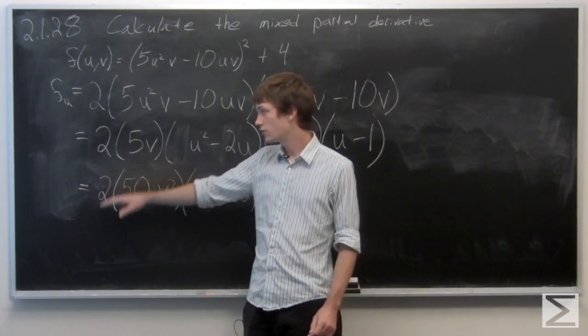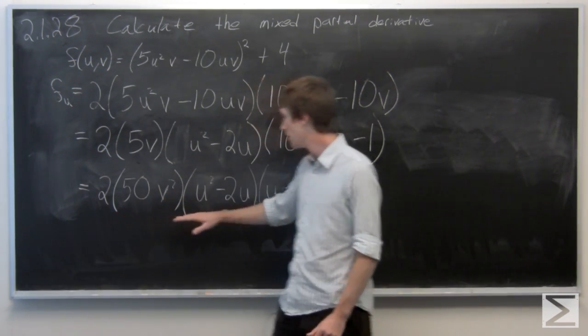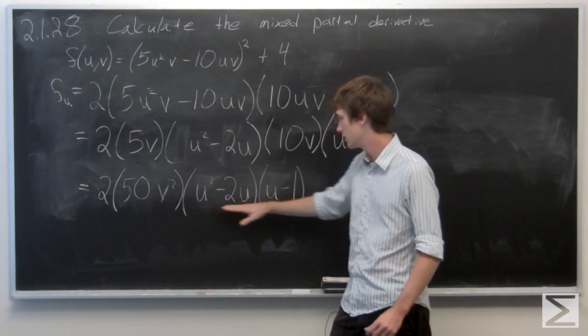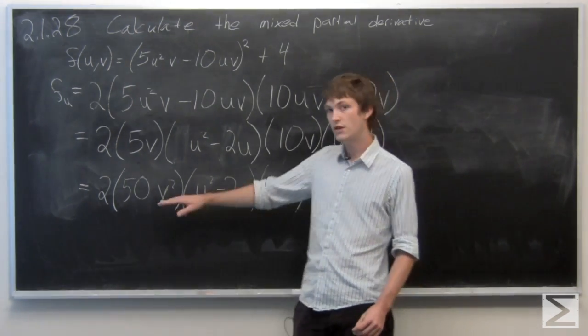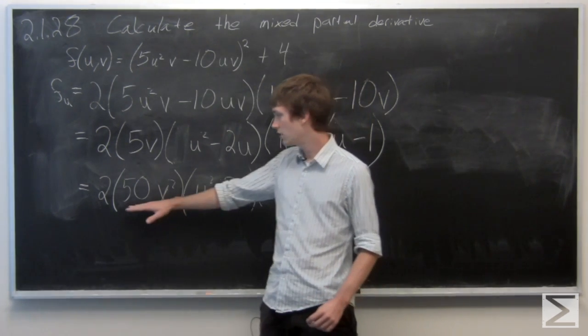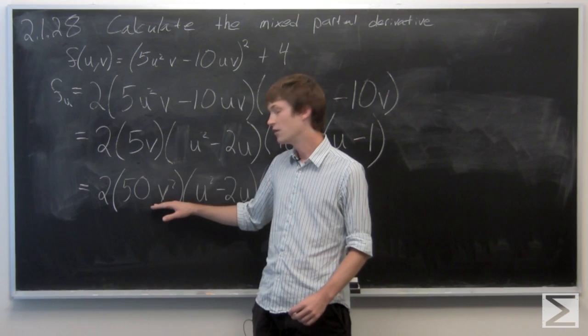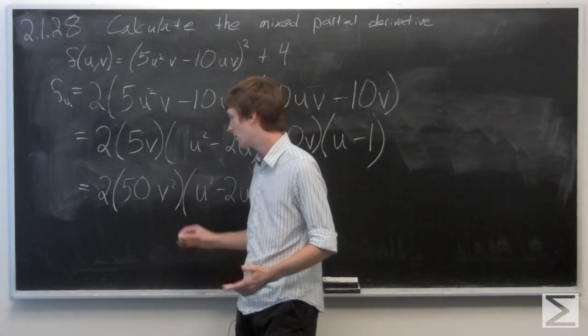So now when we take the partial derivative with respect to v, all of this entire term after the v is just going to be a constant. So we really only need to focus on the derivative of v², which we know as 2v.